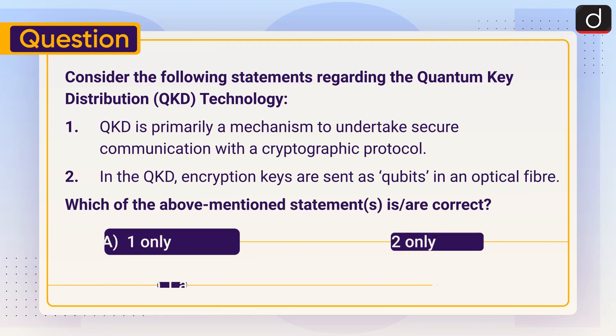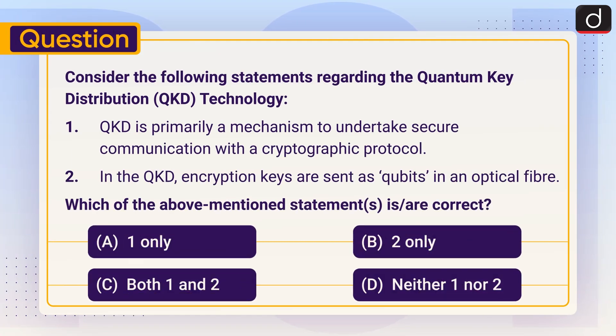Now for the practice question: Consider the following statements regarding QKD technology. Statement one: QKD is primarily a mechanism to undertake secure communication with a cryptographic protocol. Statement two: In QKD, encryption keys are sent as qubits in an optical fiber. Select the correct statement from the options: A) One only, B) Two only, C) Both one and two, or D) Neither one nor two. Don't forget to answer in the comment section.